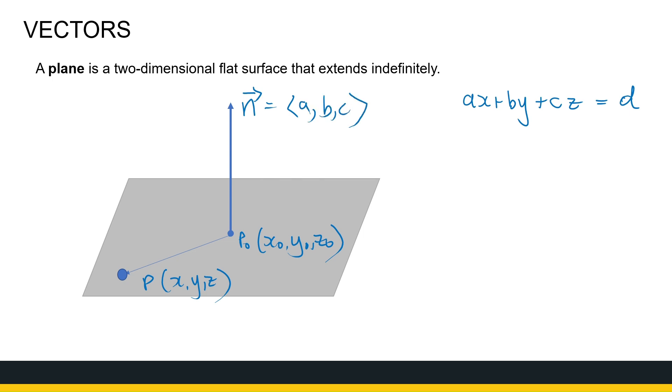So if I look at the vector P0P, the vector that starts at P0 goes to P, that vector is (x - x0, y - y0, z - z0). So now I've got a vector on the plane, and I've got a vector perpendicular to it. And what do I know about perpendicular vectors?